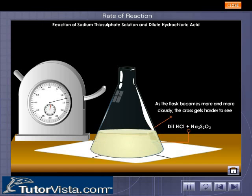When the cross is no longer visible, the stop clock is stopped. Thus, the rate of reaction is measured by tracking the rate of formation of one of the products, in this case, sulfur.